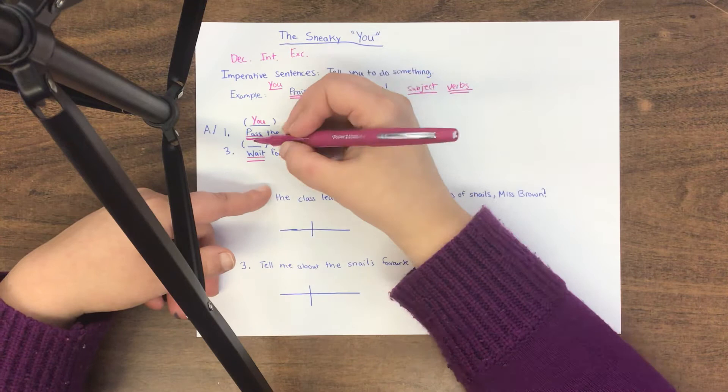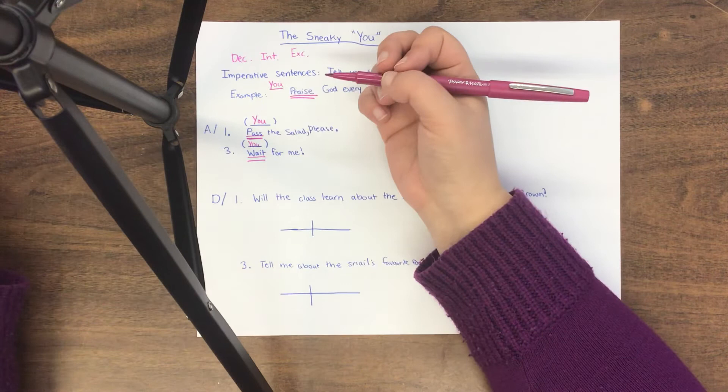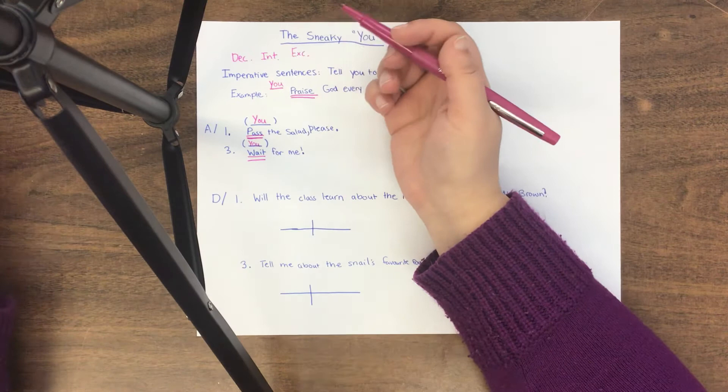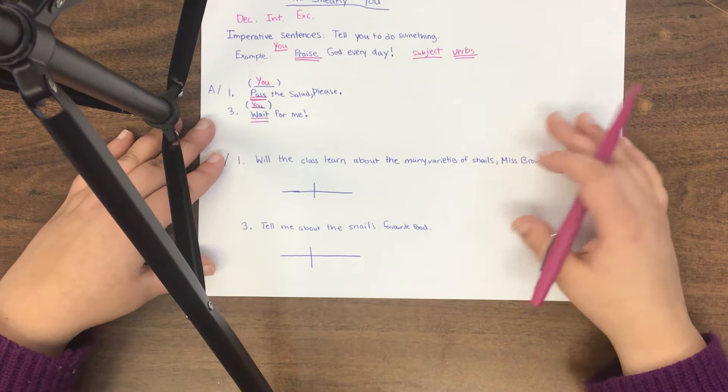This also works for diagramming too, grade fours. Whenever you can't find the subject, assume that the subject must be you and use it when you diagram your sentence. We're going to do a few examples of diagramming just to jog your brains. And that is from part D of your page. So give it a try with me.